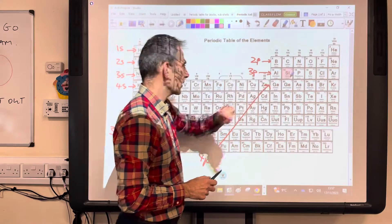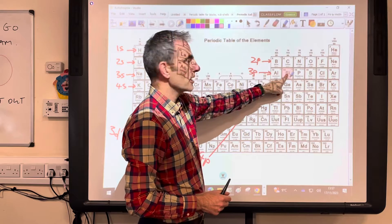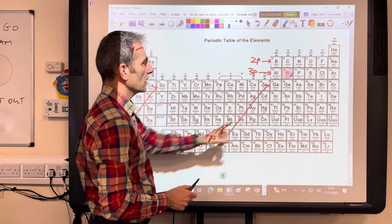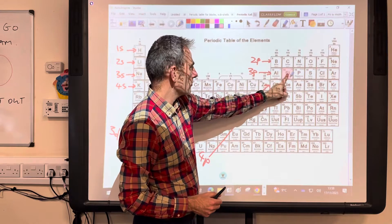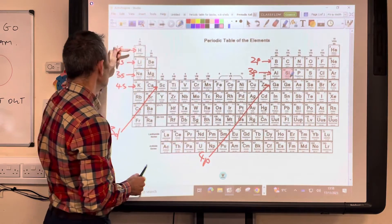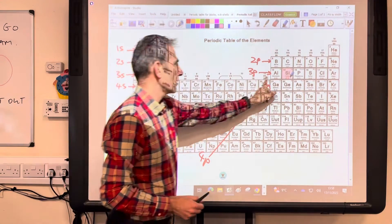So silicon first. If you think about where it is in the periodic table, we're starting to fill the 3p subshell. So all of the ones before that are full. And then look at where it is in that 3p part. It's the second one in. So it's going to be 1s2, 2s2, 2p6, 3s2, 3p2.